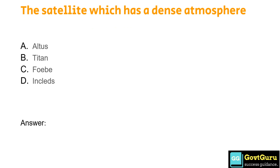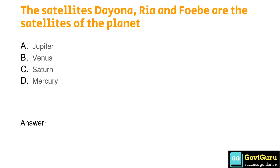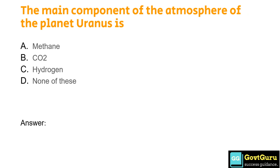The satellite which has a dense atmosphere is: Option A: Atlas, Option B: Titan, Option C: Phobos, Option D: Inclats. The answer is Option B, Titan. The satellites Diona, Rhea and Phobos are the satellites of the planet: Option A: Jupiter, Option B: Venus, Option C: Saturn, Option D: Mercury. The correct answer is Option C, Saturn. The main component of the atmosphere of planet Uranus is: Option A: Methane, Option B: CO2, Option C: Hydrogen, Option D: None of these. The answer is Option A, Methane.